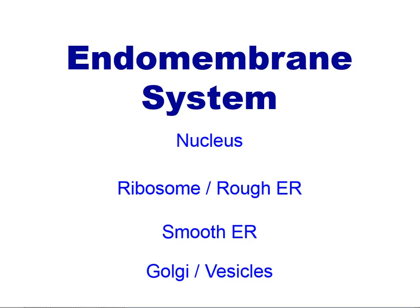In this video, I'm going to give a brief overview of what's sometimes referred to as the endomembrane system. This describes how certain organelles in eukaryotes are connected in their function. In particular, I'm going to be discussing the nucleus, the rough ER and the associated ribosomes on the rough ER, the smooth ER or smooth endoplasmic reticulum, and the Golgi and other vesicles that might be present.